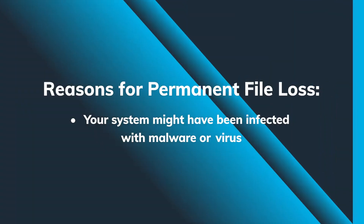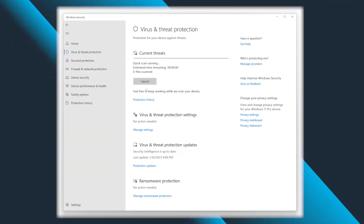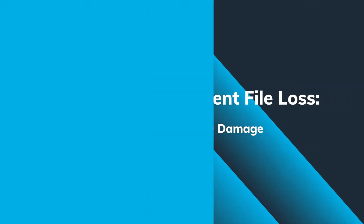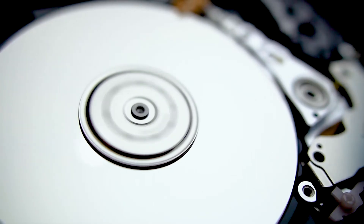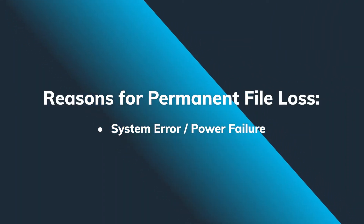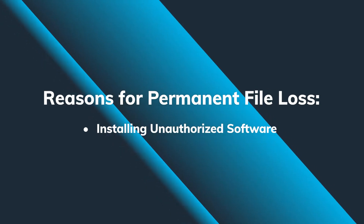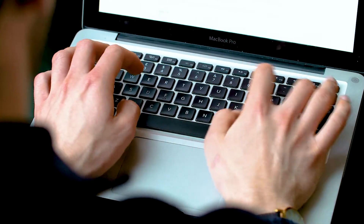There are also a lot of other conditions where we might accidentally lose data, like your system might have been infected with malware or virus, so checking and scanning it using Windows Defender or some reliable third-party antivirus makes good sense. Or it could be a physical damage to the hard drive, which unfortunately cannot be recovered. Sometimes system errors and power failures can interrupt file processing and cause file corruption or deletion. Or last but not least, installing some unauthorized software pieces can also put some of your data at risk.